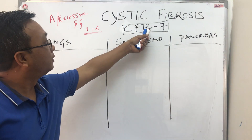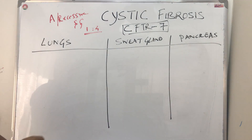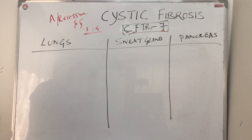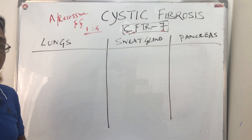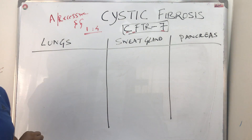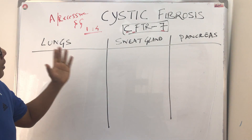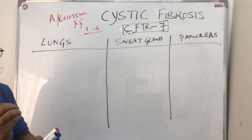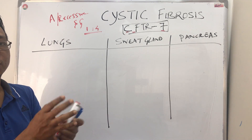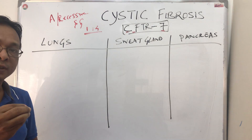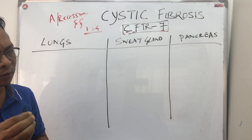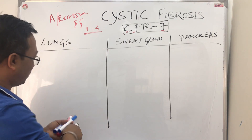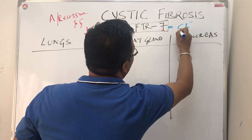Cystic fibrosis — the CFTR gene is on chromosome number seven. This is how we remember it: cystic fibrosis equals chromosome number seven. The defect is in chromosome number seven, and remember this is a monogenic disorder, not a polygenic disorder. Like sickle cell anemia, this is autosomal recessive and monogenic. The problem is in the CFTR protein, governed by chromosome number seven, and this protein is responsible for chloride channels specifically. It also indirectly affects the sodium channels.